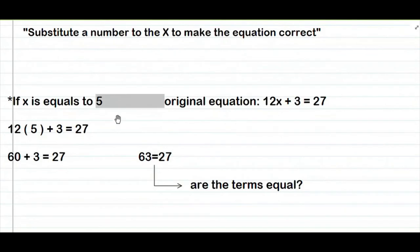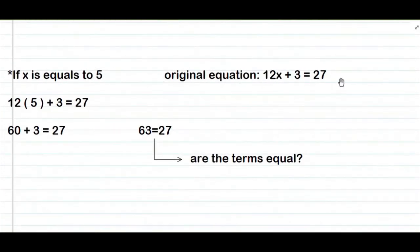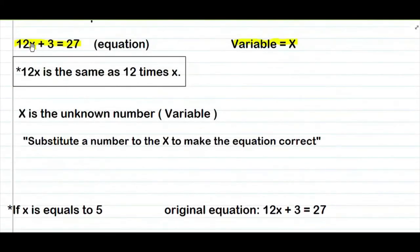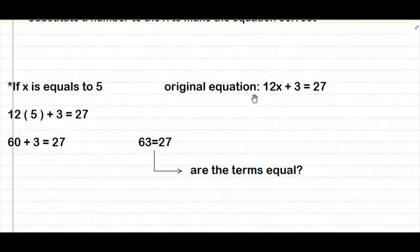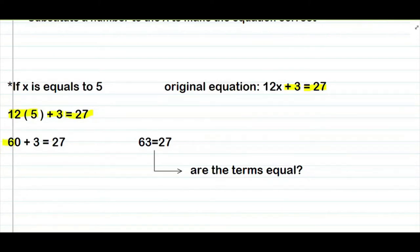If x is equals to 5 — ito yung ating original equation. If x is equals to 5, papalitan mo lang ng 5 yung x. Ang mangyayari is 12 times 5, tapos plus 3, equals to 27. Ang mangyayari: 12 times 5 is equals to 60, tapos plus 3, equals to 27. Pagka-kinompute mo ito, ang mangyayari is 63 is equals to 27.